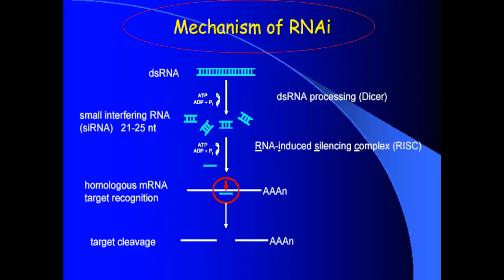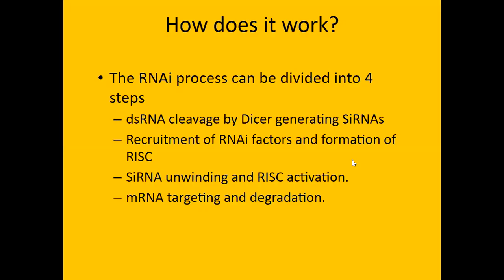In 1998, Mellow and Fire showed that a combination of sense and antisense RNA — double-stranded RNA — was 10 times more effective. Regarding the mechanism of RNA interference: starting from double-stranded RNA, it is cut by enzymes into small pieces. The RNA-induced silencing complex, RISC, is then formed, which has a polyadenylated tail and a 5' cap, and the target mRNA is cleaved by it.